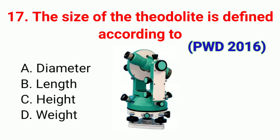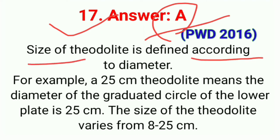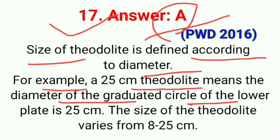Question number seventeen: The size of a theodolite is defined according to. The correct answer is option A, diameter. The size of a theodolite is defined according to the diameter of the graduated circle of the lower plate. For example, a 25 cm theodolite means the diameter of the graduated circle is 25 cm. The size of theodolite varies from 8 to 25 cm.